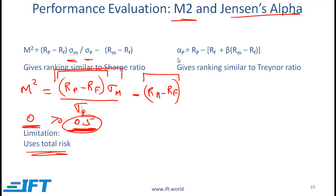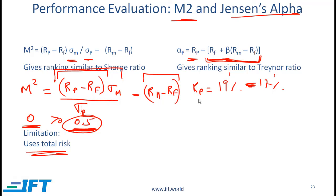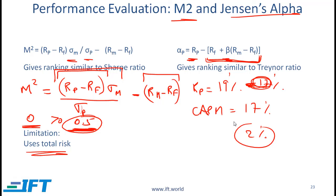Theoretically, the best measure is Jensen's Alpha, which is a number with meaning and uses systematic risk. Jensen's Alpha is the return on a portfolio minus the return predicted by CAPM. If the portfolio return is 19% and CAPM predicts 17%, then Jensen's Alpha is 2%, indicating the manager is adding value at a given level of risk. Jensen's Alpha gives a ranking similar to the Treynor ratio because both use systematic risk.